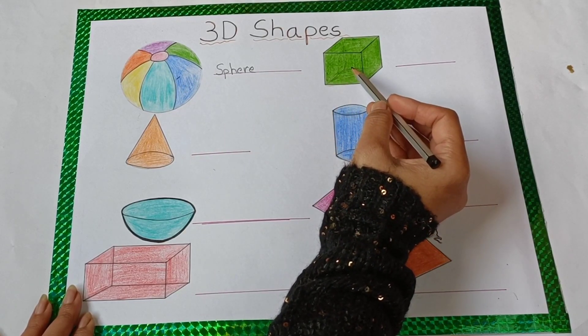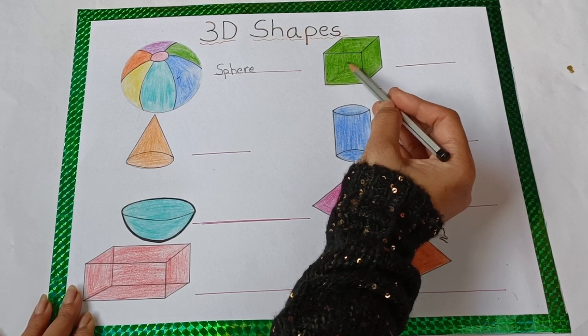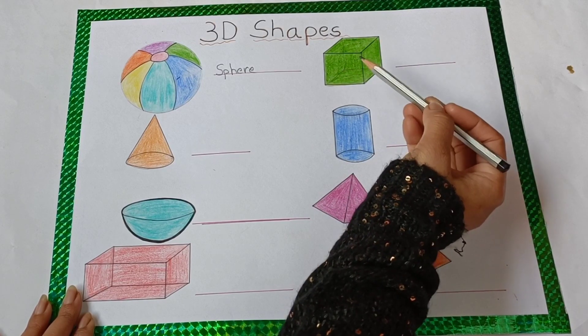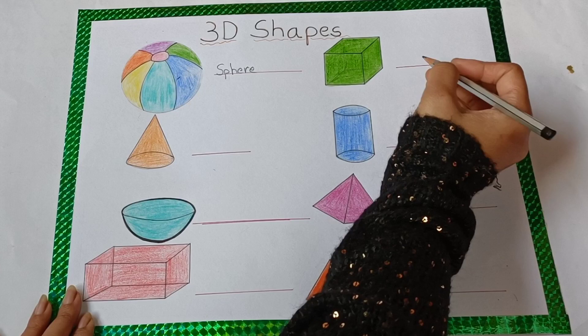Next shape is cube shape. It is just like a square, but this is a three-dimensional square. Okay, it is known as cube. So right here,